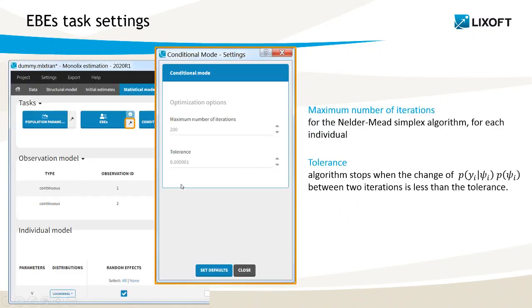Two settings of this algorithm are available in the graphical user interface and can be accessed via this button. The first one is the maximum number of iterations of the Nelder-Mead simplex algorithm for each individual. The second is the absolute tolerance criteria. The algorithm stops when the change of the value of the function between two iterations is less than the tolerance. These settings actually do not need to be changed.